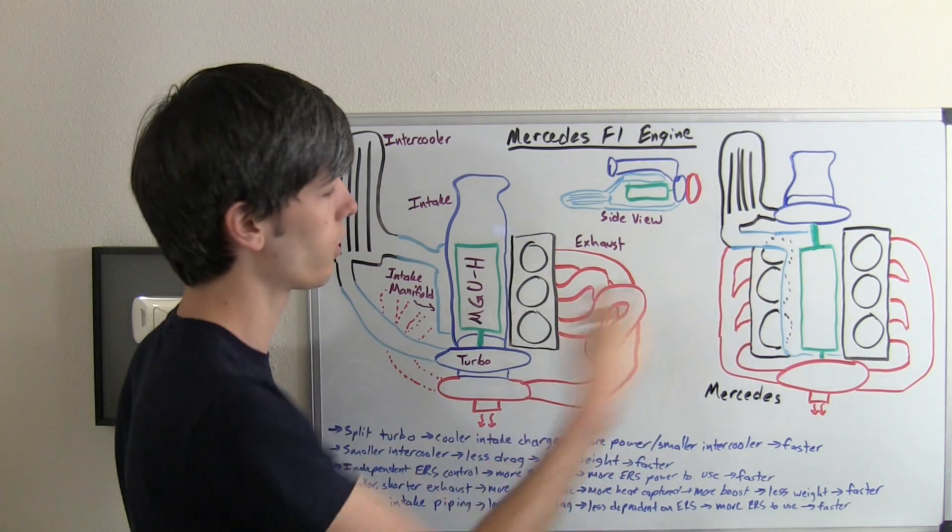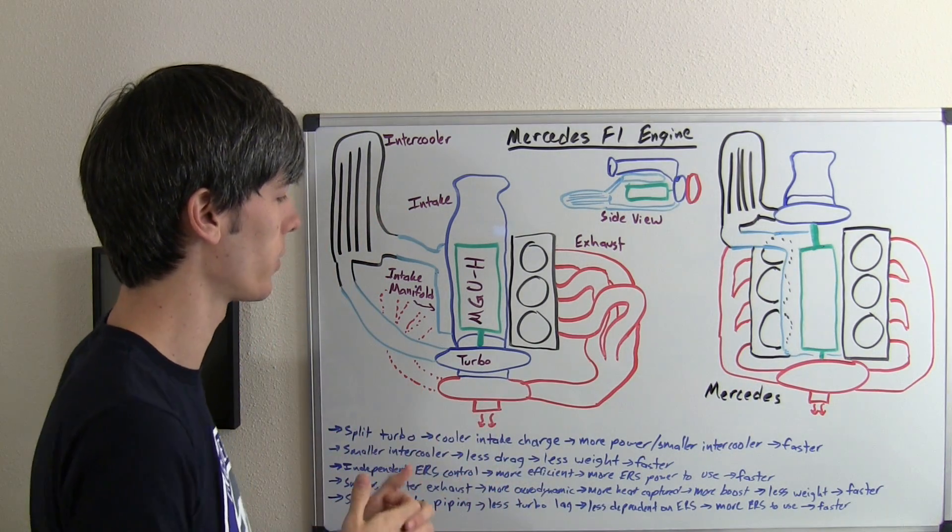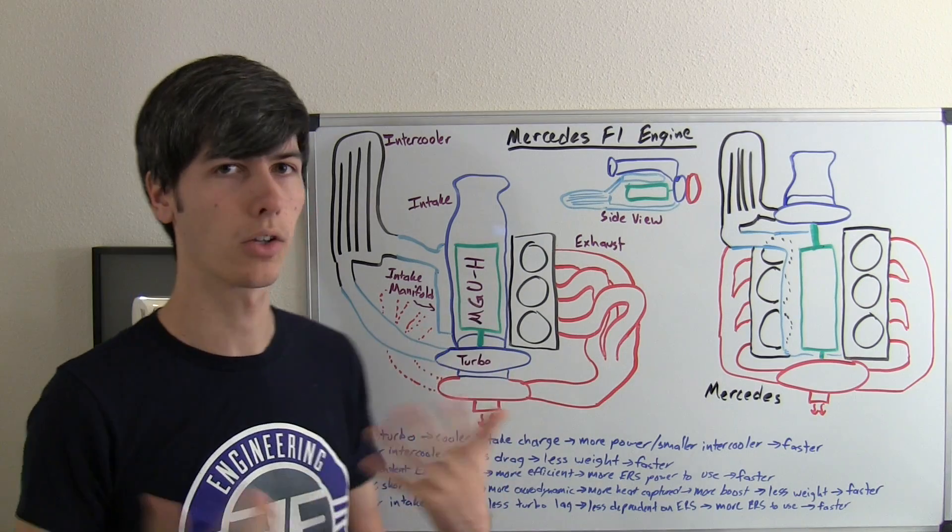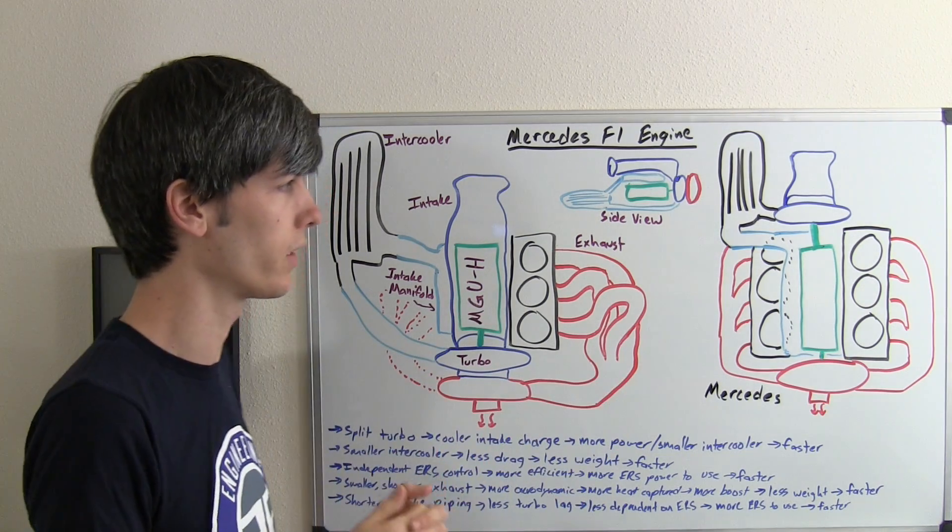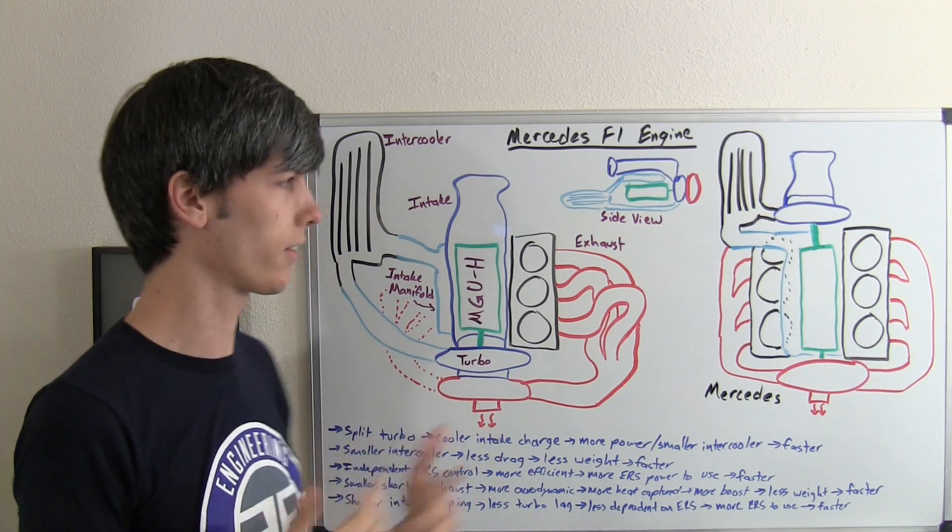One of the things I haven't drawn in either of these pictures is the MGUK, which is the kinetic energy recovery system which is connected to the crankshaft and can directly accelerate the vehicle. If you have more energy left over, you can send it to the MGUK and accelerate the vehicle.